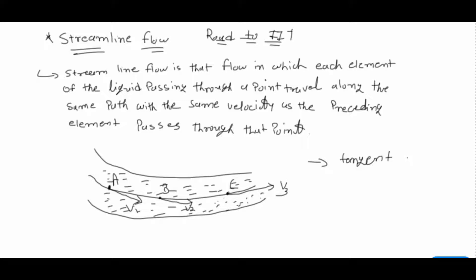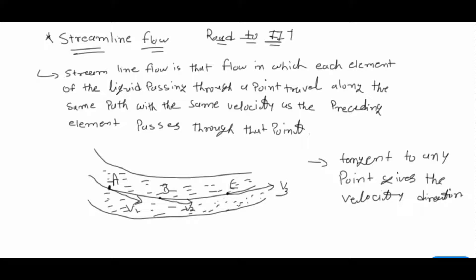One more important point: two streamlines cannot cross each other. This is a remarkable property of streamline flow. The tangent to any point on a streamline gives the velocity direction at that point. So this is all about streamline flow.